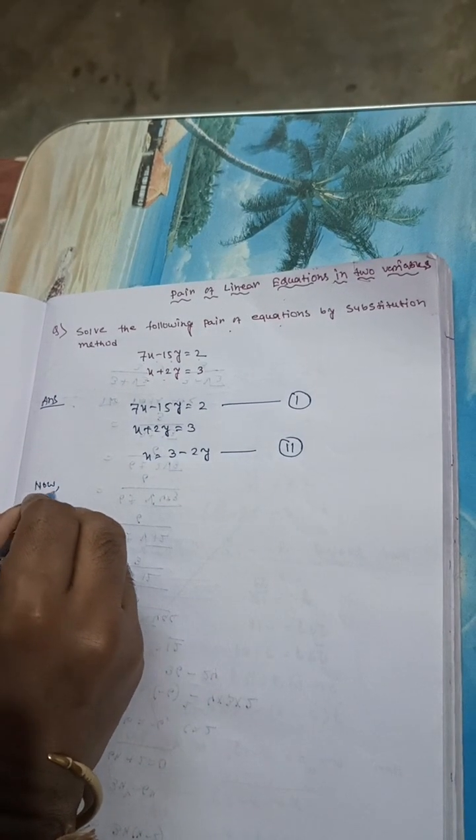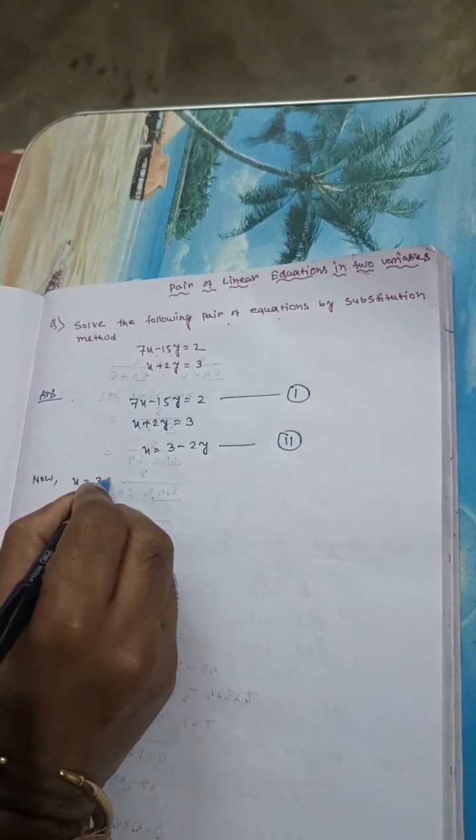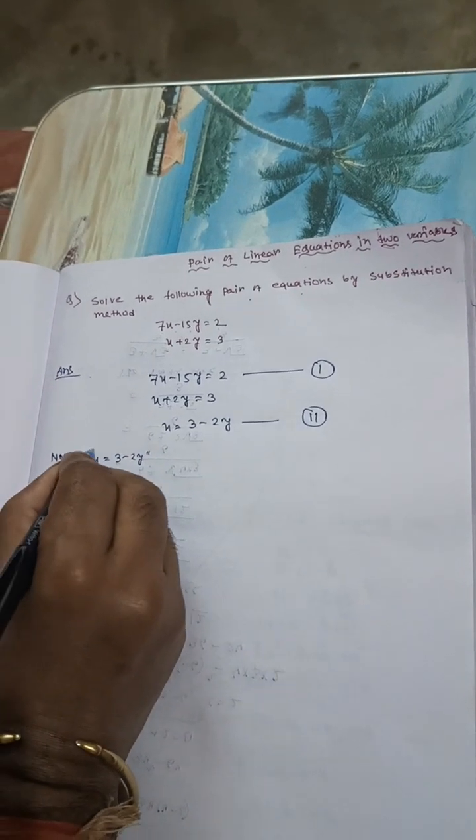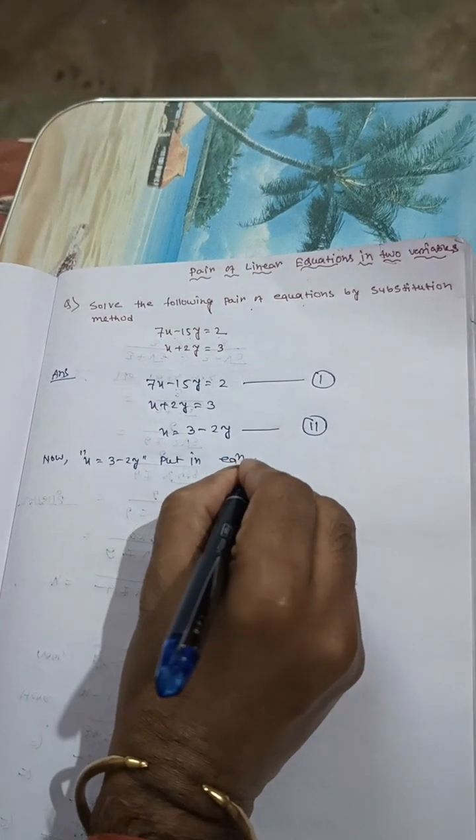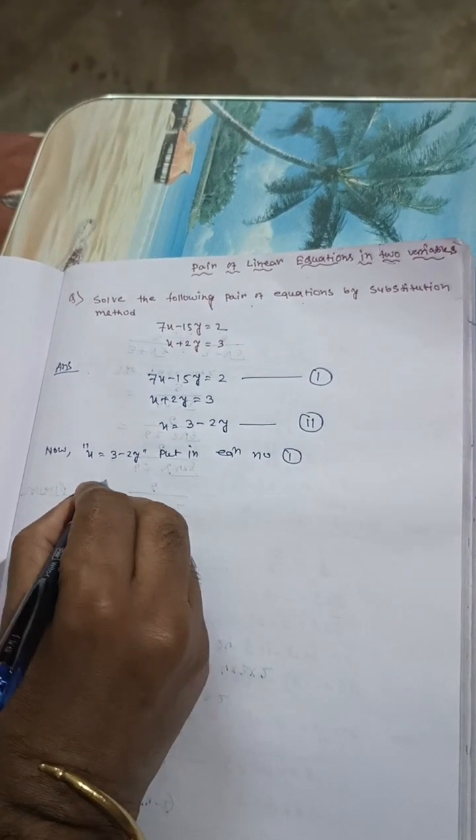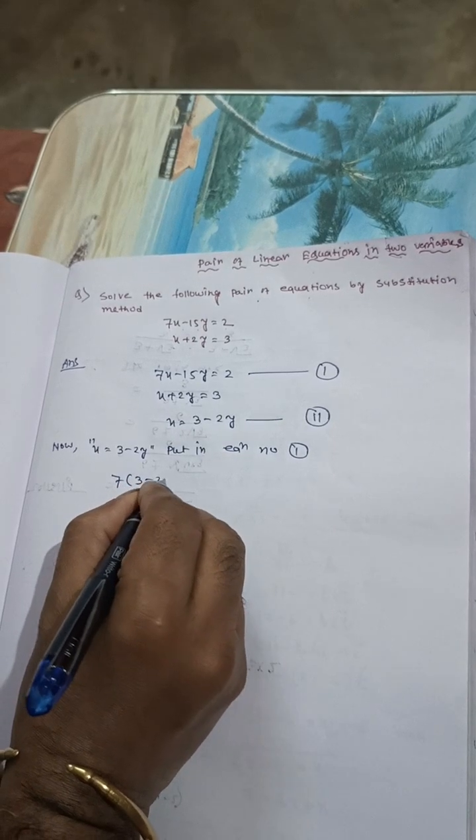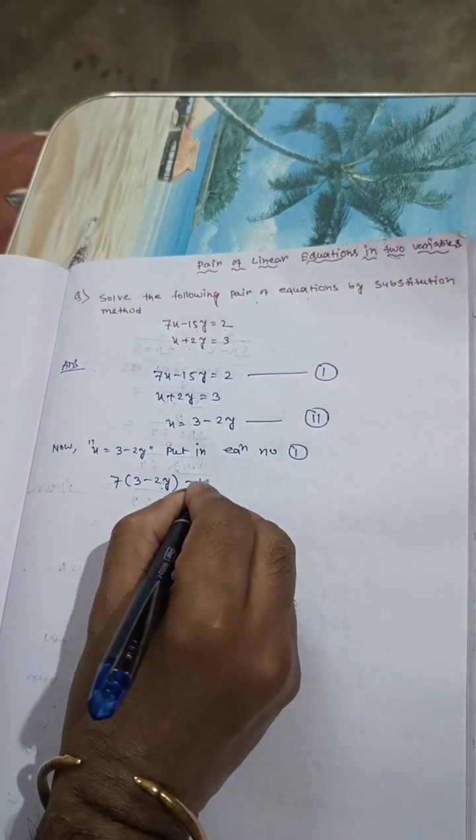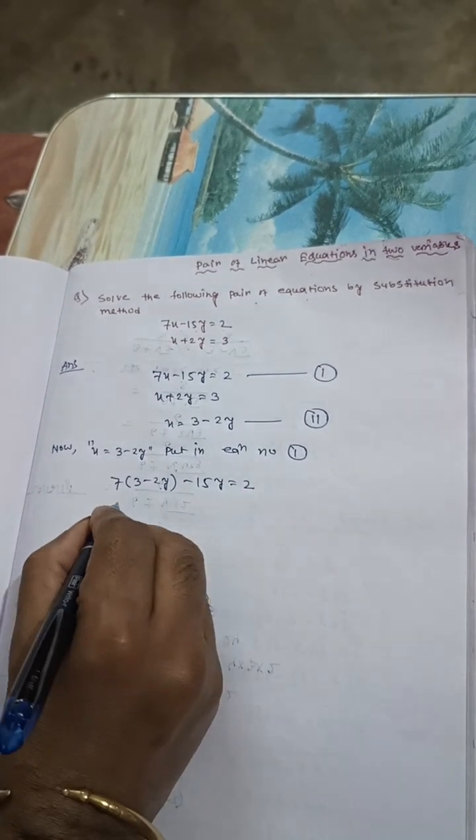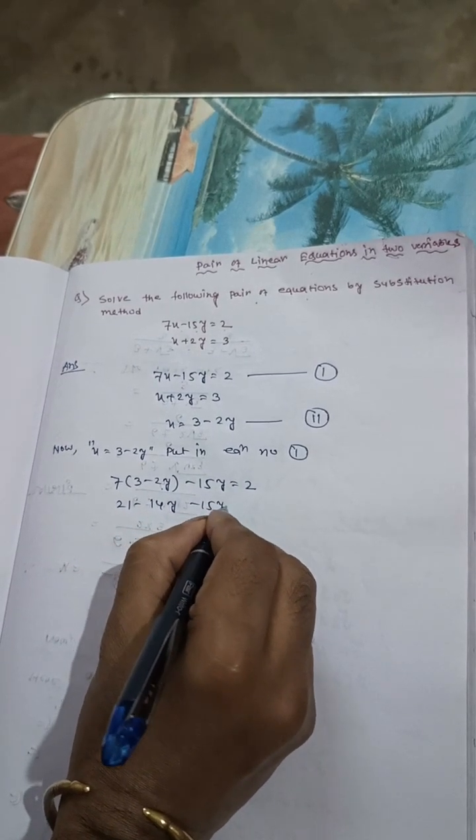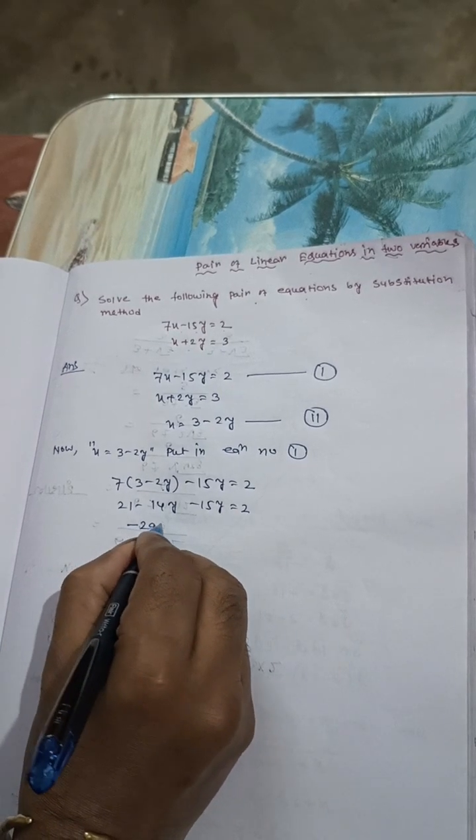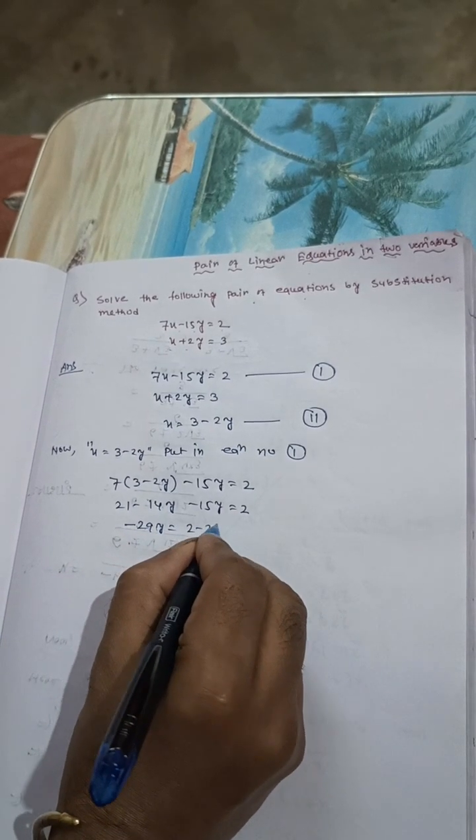Now, put x equals 3 minus 2y into equation 1. That becomes 7 times (3 minus 2y) minus 15y equals 2. So, 21 minus 14y minus 15y equals 2. That means minus 29y equals 2 minus 21.